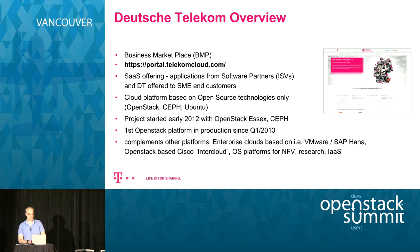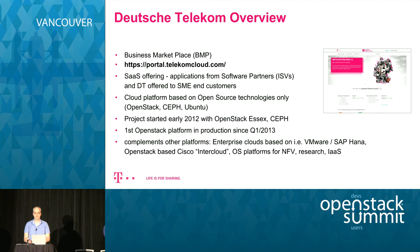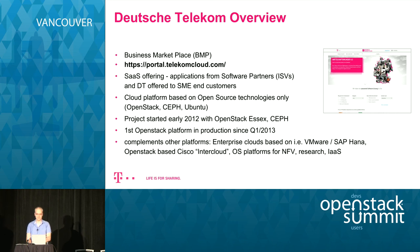The enterprise applications we are talking about today are running on the Business Marketplace of Deutsche Telekom. The Business Marketplace is a web portal where end customers of Deutsche Telekom can order and book software applications — one seat, 50 seats, for example. In general, this is a Software as a Service offering. The software offered on this platform is from ISVs, from software partners of Deutsche Telekom, or from DT itself. The target group is small and medium-sized enterprises — Deutsche Telekom has around 3 million customers of this size.